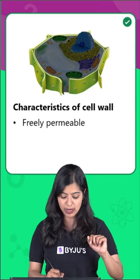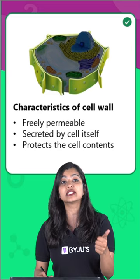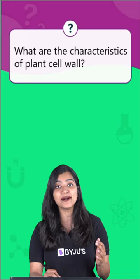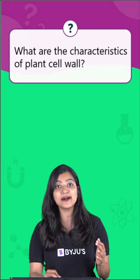The cell wall is secreted by the cell itself, and its primary function is to provide protection to all the cellular content. So whenever you are writing your answer, make sure that you have these keywords: rigid, non-living, freely permeable, and protective.